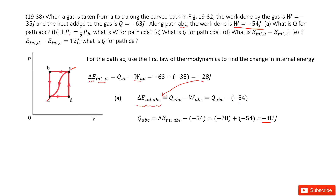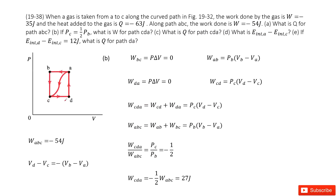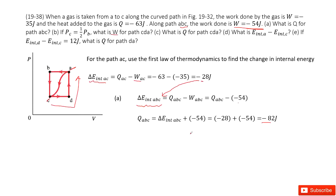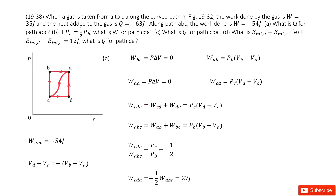For the second part, we're told the pressure P_C equals half of P_B. It asks you: what is the work done by C-D-A? To find W_CDA, we can list what is given. We know the work done by A-B-C is negative 54. Now, can you find how much work is done along C-D-A? It looks like mirror symmetry.